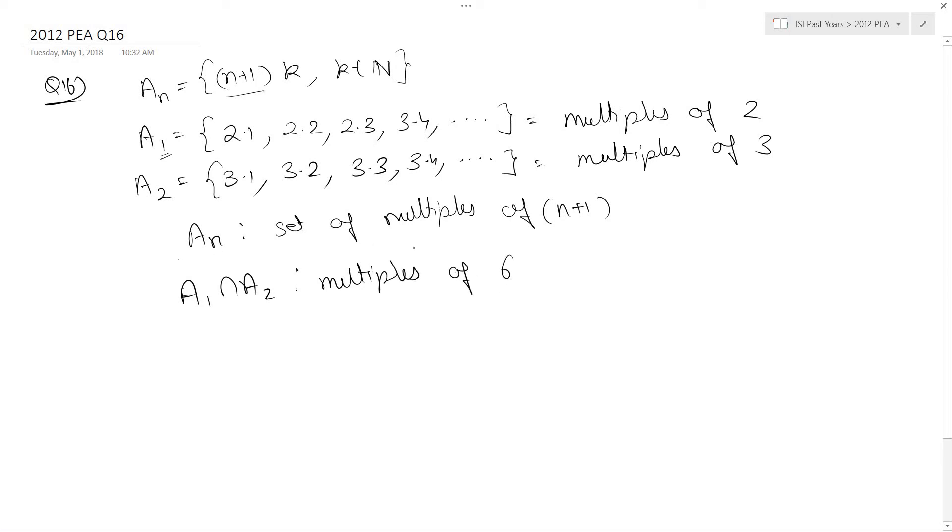Since A_n is the set of multiples of (n+1), the set of multiples of 6 will be A_5. That is the answer, which is option C.